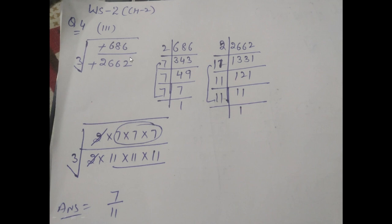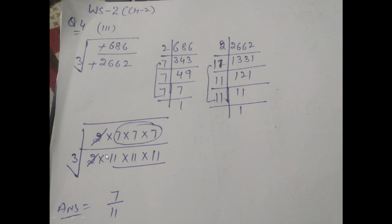Your next question is cube root of 686 divided by 2662. First of all, you will find the prime factors of these two numbers. The prime factors of 686 are 2 × 7 × 7 × 7, divided by 2 × 11 × 11 × 11. Cancel the 2s. We are left with three 7s divided by three 11s. Take one 7 out and one 11 out, and your answer will be 7 over 11.